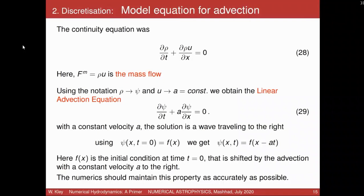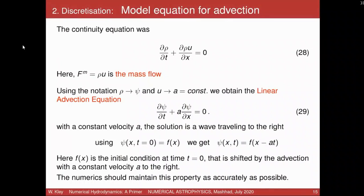I will go through this in more detail because the project I've put on the webpage asks you to solve this advection equation for a simple 1D linear problem. So we have the continuity equation. F_M was the mass flow, rho times U, mass flux. We use generic variables: psi again. In the script for the project, we denote rho = psi and U = A, where A is now constant. If A is constant, that means U is constant, and we have a linear advection equation — we can pull U out of the derivative.